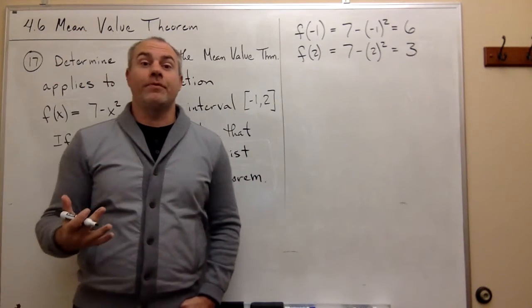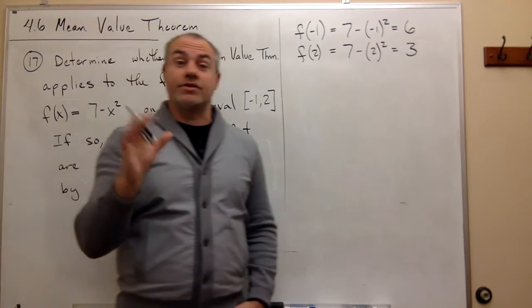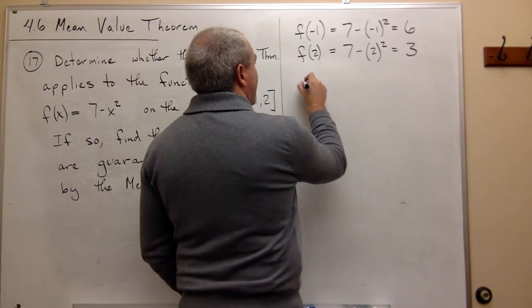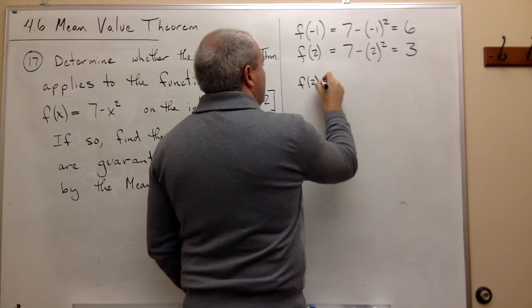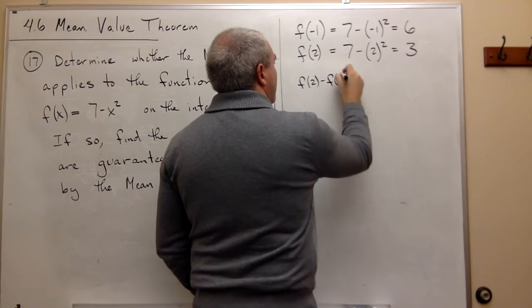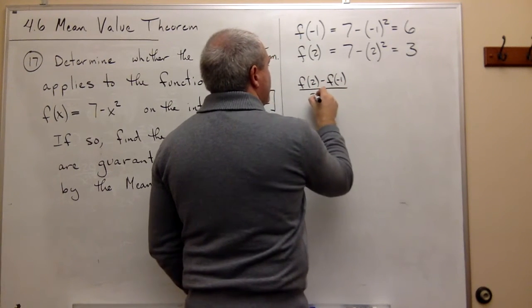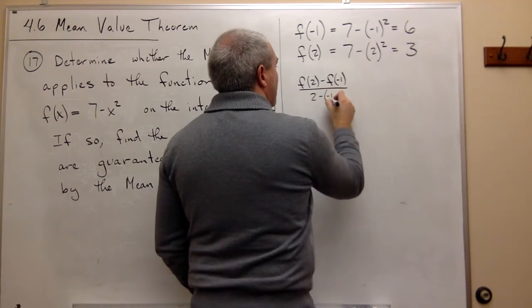So now that I know what f of minus 1 and f of minus 2 are, I can find the slope of the secant line that connects those two points. And the way I do that is I want f of 2 minus f of minus 1 over 2 minus minus 1.